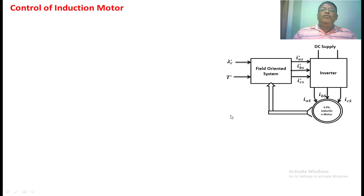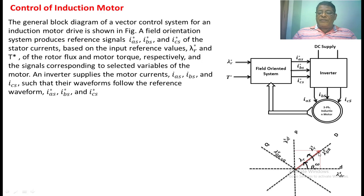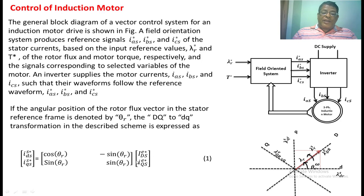The D axis and Q axis represent the stator frame. Capital D and capital Q represent the excitation frame. When we take the rotor flux on the excitation frame, theta-naught is the angle between the rotor flux on the excitation frame and the rotor flux on the stator frame. By means of this angle we can convert the stator current on the excitation frame to the stator current on the DQ frame using the transformation matrix.